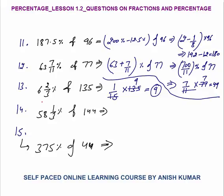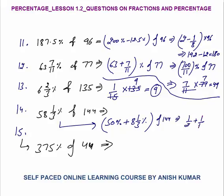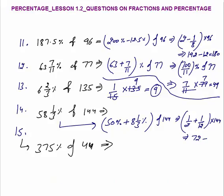I have drawn a line so that question 13 is different from 12. 58 1/3% of 144 — you can break this as 50% plus 8 1/3% of 144. 50% means half; 8 1/3% is 1/12. Very important — 8 1/3% or 8.33% equals 1/12 of 144; of means multiplication. This equals 72, plus 144/12 = 12. So the answer is 84.